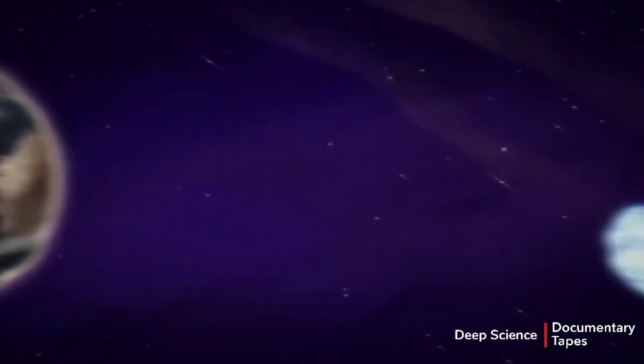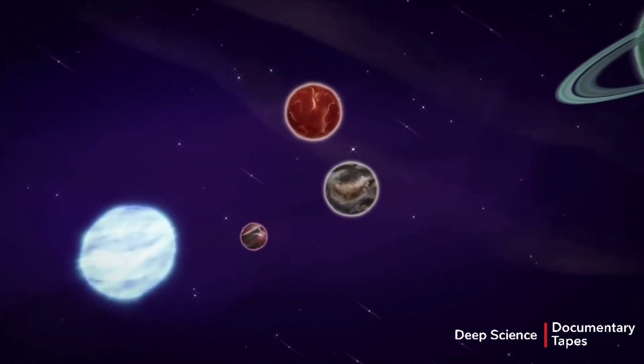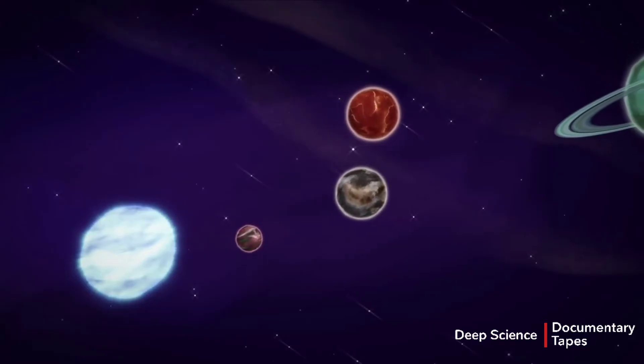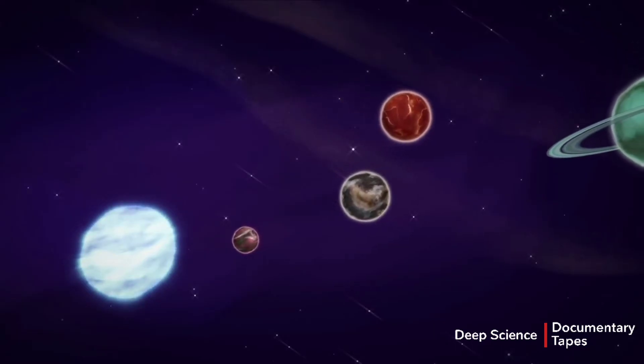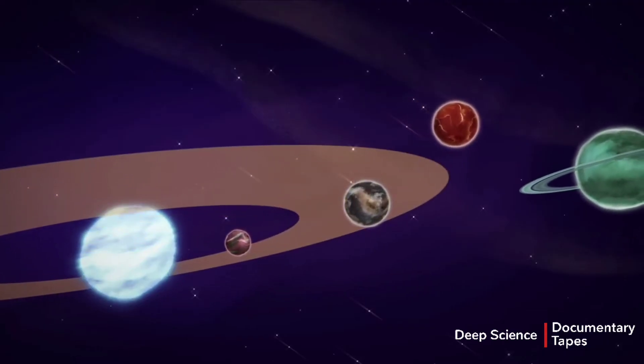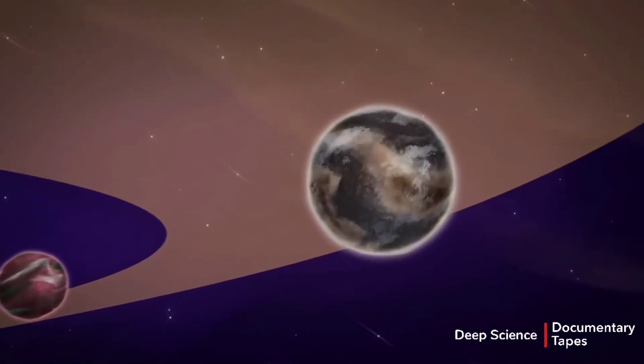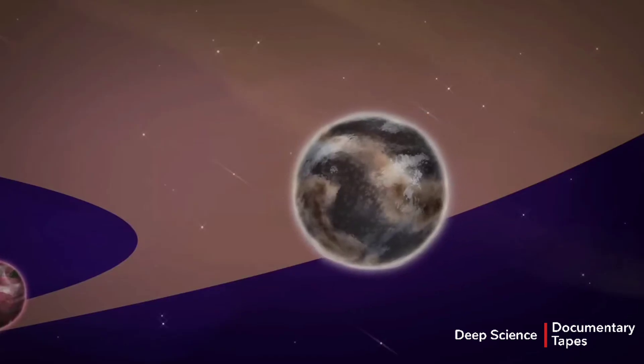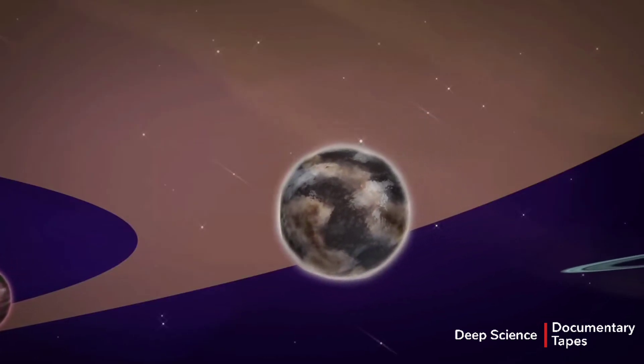There's a handy concept astronomers use to help them figure out where to look around any given star for exoplanets that just might have the right stuff for life. It's called the habitable zone. It's the distance from a star where a rocky planet with an atmosphere could have liquid water on its surface.